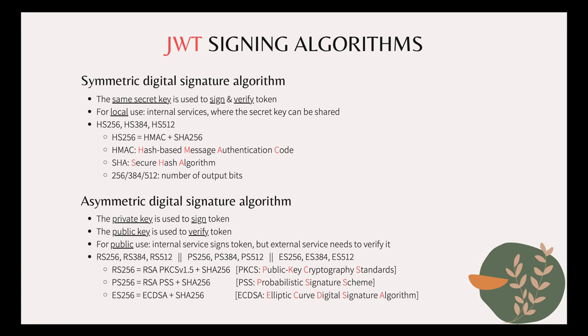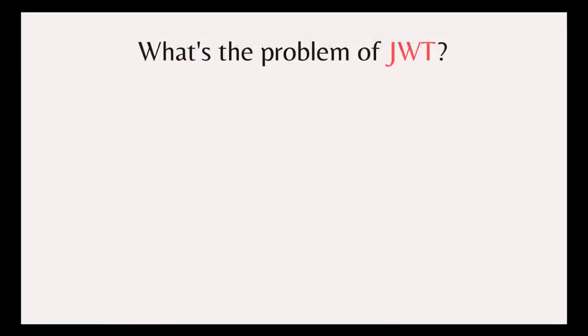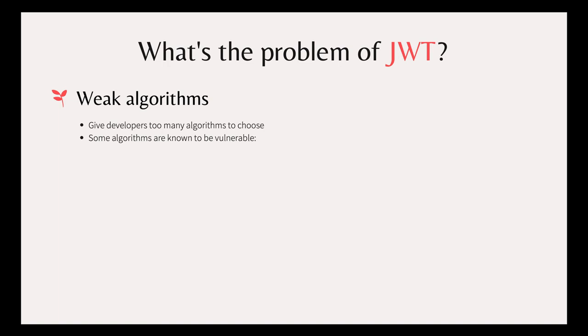So far it sounds like JWT is a good standard, and it gives us a lot of flexibility to choose whatever signing algorithms we want. So what exactly are its problems? Well, the first problem is weak signing algorithms. JWT gives developers too many algorithms to choose, including algorithms that are already known to be vulnerable. Such as RSA with PKCS version 1.5, which is susceptible to padding oracle attack, or elliptic curve digital signature algorithm, which is vulnerable to invalid curve attack. For developers without deep experience in security, it would be hard for them to know which algorithm is the best to use. So the fact that JWT gives developers too much flexibility to choose the algorithm is like giving them a gun to shoot themselves in the foot.